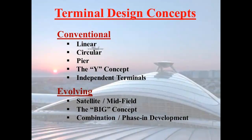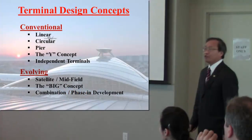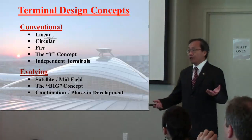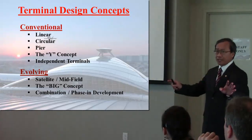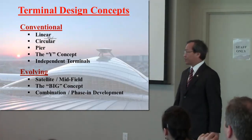There are two airport terminal design concepts. The conventional designs include the linear, the circular, the pier, the wide concept, and independent terminals. The evolving categories include satellites, midfield designs, the big concept, and a combination of facing development concepts.